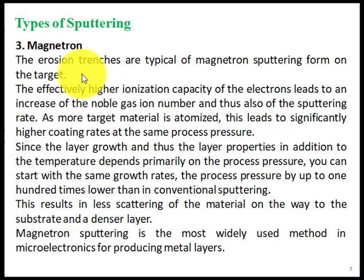In magnetron sputtering, the magnetic field is applied and when the magnetic field is parallel to the cathode, the electrons move and ionize the noble gas. As more target material is atomized, this leads to significantly higher coating rates at the same process pressure. Since layer growth and layer properties depend primarily on process pressure, the process pressure can be up to 100 times lower than in conventional sputtering. This results in less scattering of the material on the way to the substrate, and a dense layer is produced at the substrate surface.